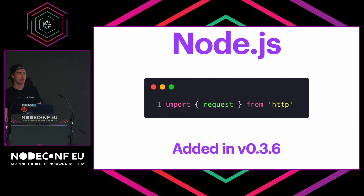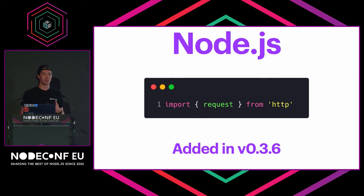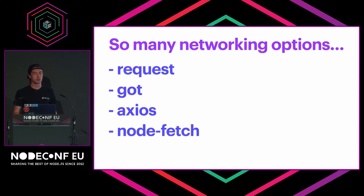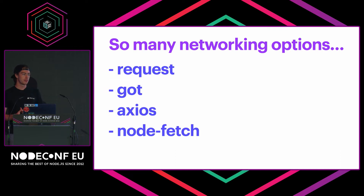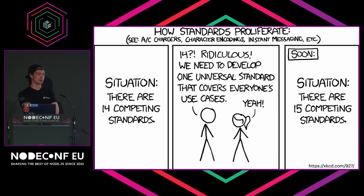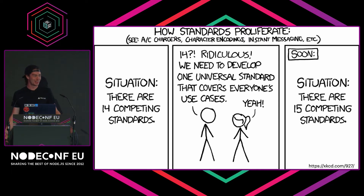In Node.js, we started way back in 0.3.6 with the request API. It actually kind of looks like that XML API at the beginning, where you have to use event handlers — it's not as simple as just a request and magic. But what this underlying API let people do was develop a bunch of different options: the request library, got, axios, and even node-fetch, which polyfilled the fetch experience in many environments. And this is like that XKCD comic — we start with 14 competing standards, so how do we solve this? Another standard. Now there's 15.